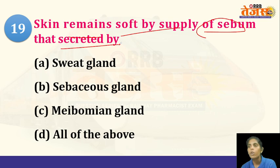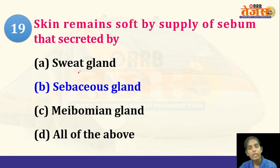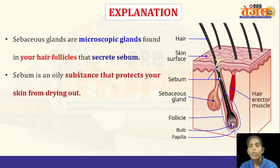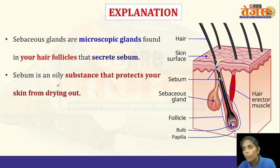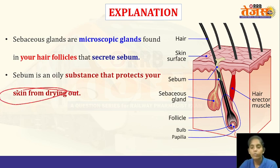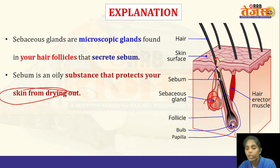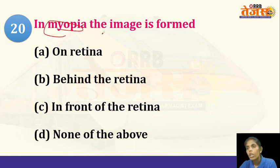Next: the skin remains soft due to sebum secreted by which gland? The skin has melanocytes, keratinocytes, sweat glands, and sebaceous glands. Sebaceous glands secrete a substance called sebum, an oily substance which keeps the skin layer moist and protects it from drying out.